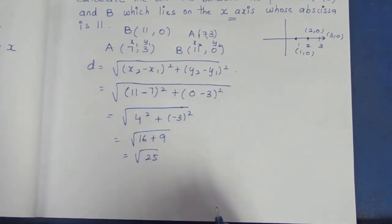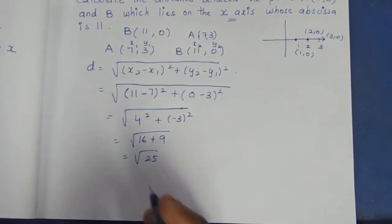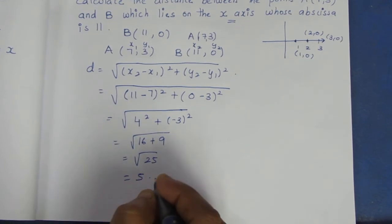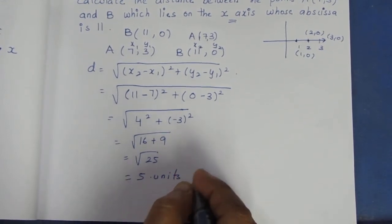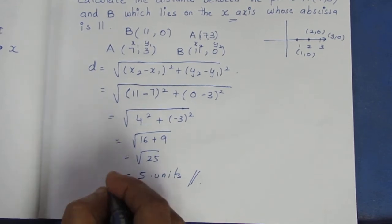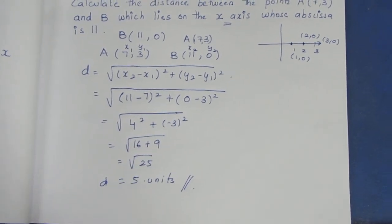Root 25 is 5. 5 units is the A, B distance value.